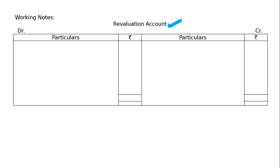The value of stock is to be reduced to 1,25,000. Stock value goes from 1,40,000 to 1,25,000 — a reduction of 15,000. So stock is debited at 15,000 on the debit side of the Revaluation account, as it is a decrease in asset.